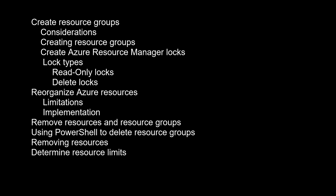Creating resource groups. There are some important factors to consider when defining your resource group. All the resources in your group should share the same lifecycle — you deploy, update, and delete them together. If one resource, such as a database server, needs to exist on a different deployment cycle, it should be in another resource group. Each resource can only exist in one resource group. You can add or remove a resource to a resource group at any time. You can move a resource from one resource group to another group, though limitations do apply to moving resources. A resource group can contain resources that reside in different regions, and can be used to scope access control for administrative actions. A resource can interact with resources in other resource groups, which is common when the two resources are related but don't share the same lifecycle.